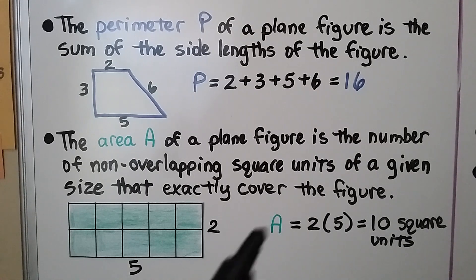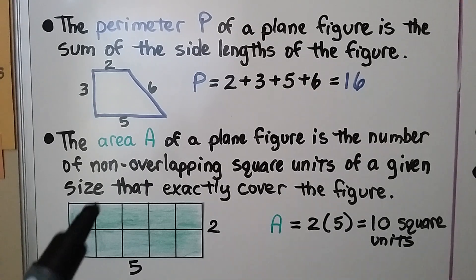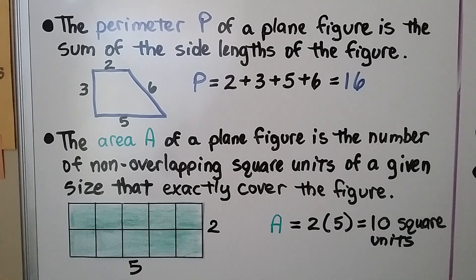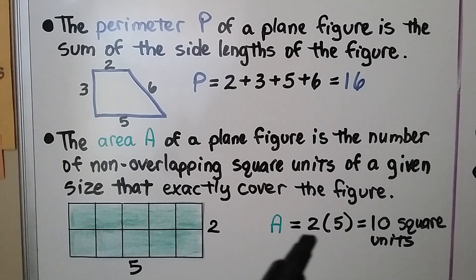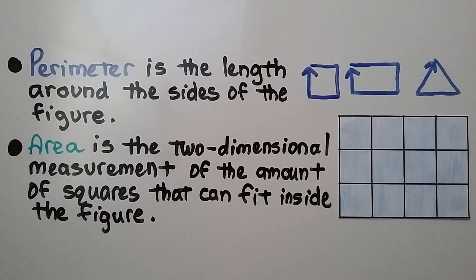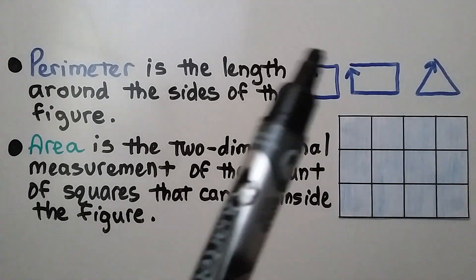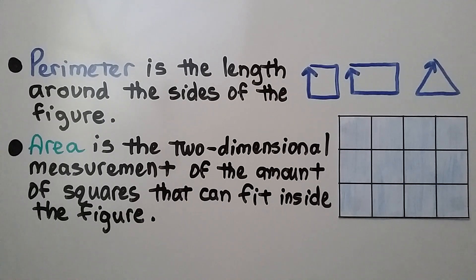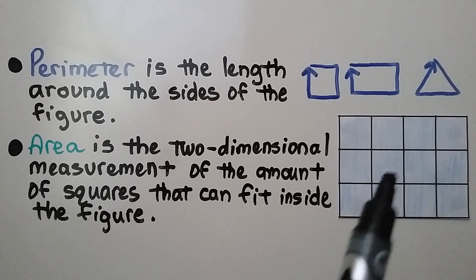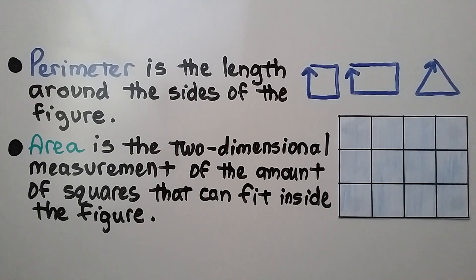The area, A, of a plane figure is the number of non-overlapping square units of a given size that exactly cover the figure. We have 5 across and 2, so we do 2 times 5 — that's 10 square units. Perimeter is the length around the sides of the figure, regardless of the shape. Area is the two-dimensional measurement of the amount of squares that can fit inside the figure.